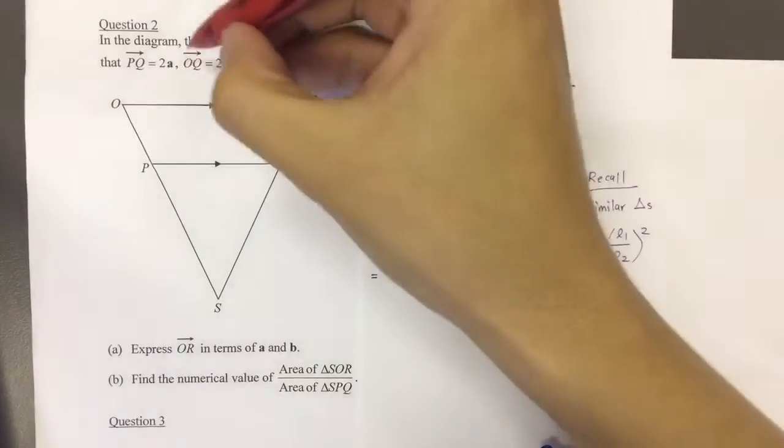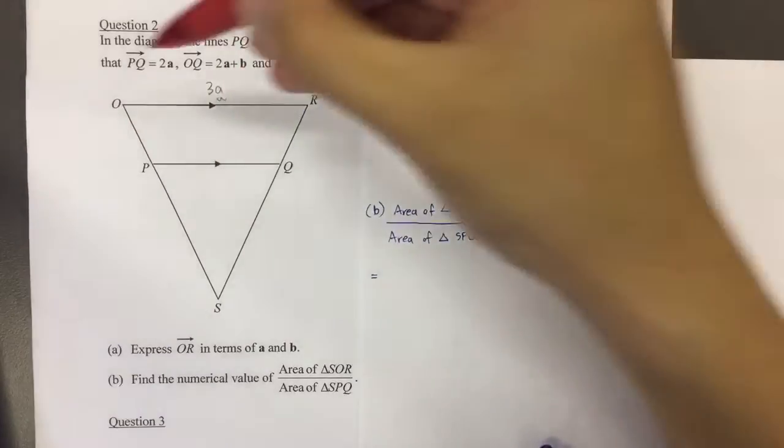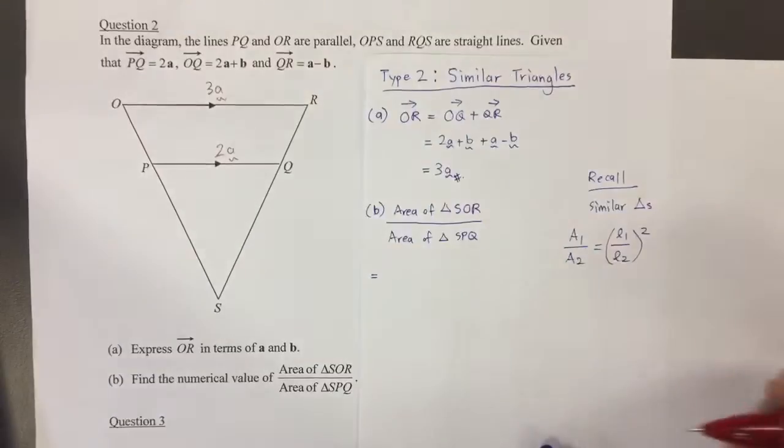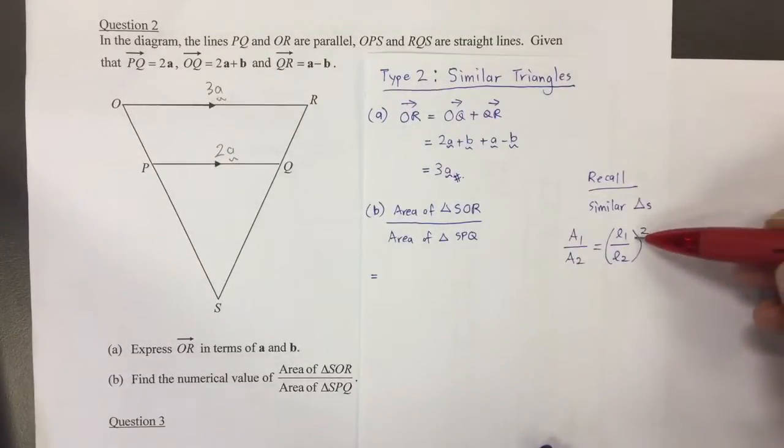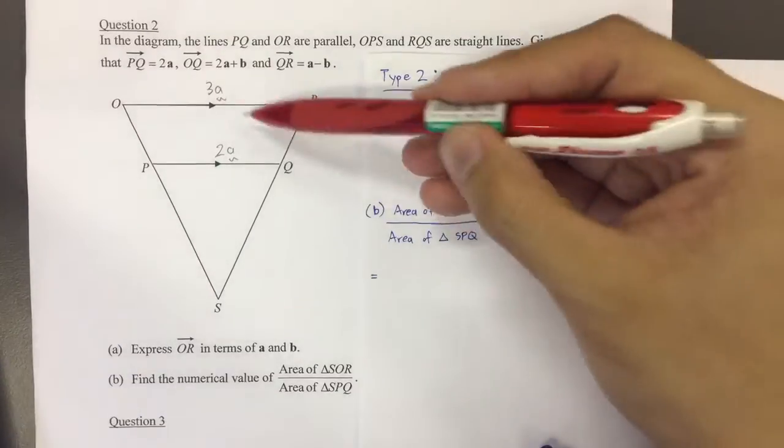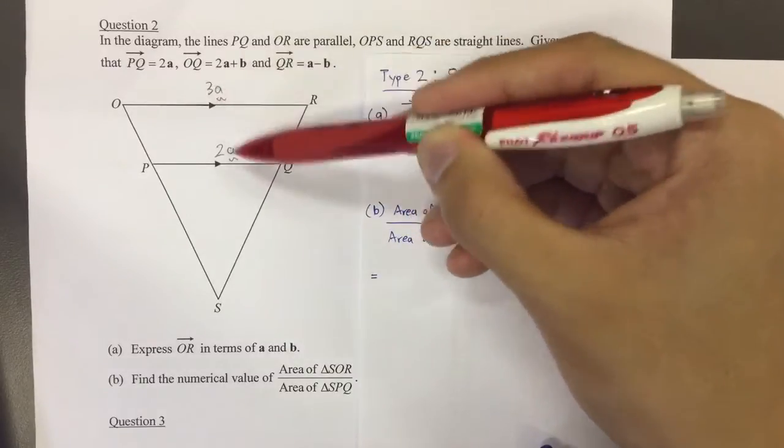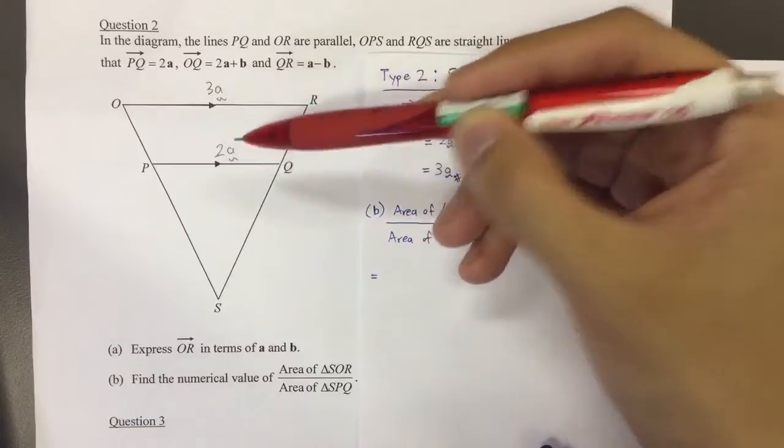Okay, OR is actually expressed as 3A. And PQ happens to be already 2A. These are vectors. However, we want to use their lengths. We're going to compare their lengths. So actually, magnitude-wise, you realize that this is 3 units and this is 2 units, because they both share the same vector A.